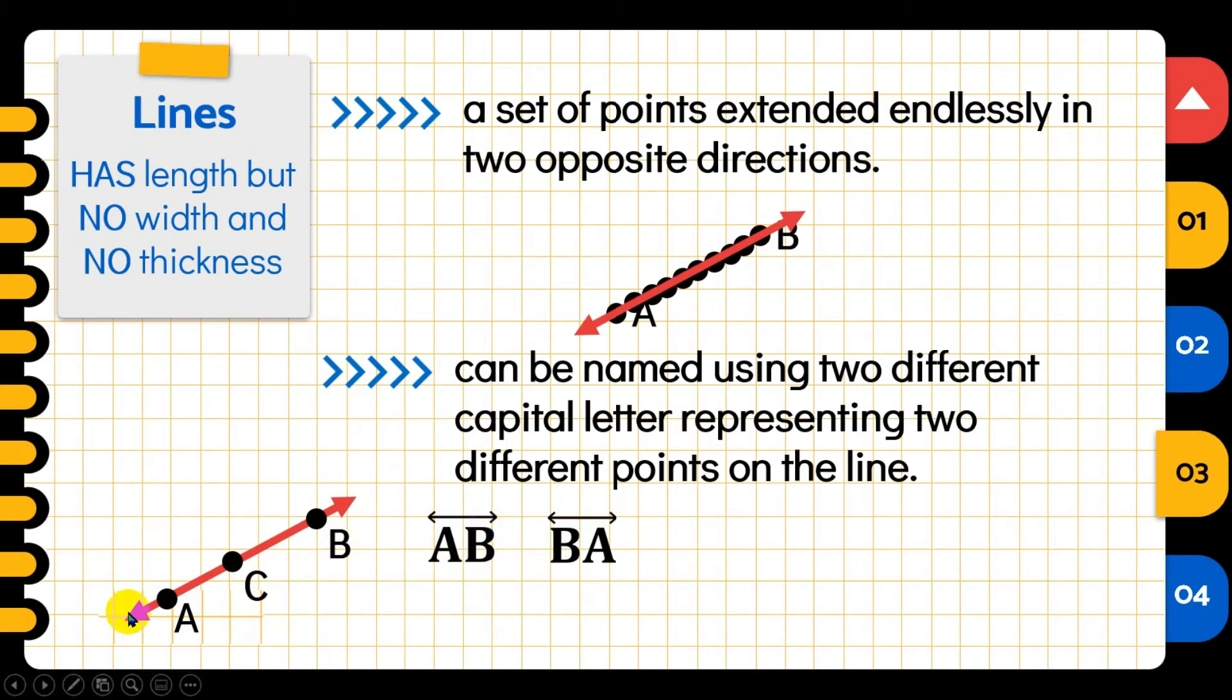While in this example, since we have three distinct points, we can give different names to this line. But again, even though we can give different names to this line, it refers to only one line. We have line AB or line BA. Again, it extends endlessly into opposite directions. And our symbol for line is the double-headed arrow above the two capital letters. And these capital letters are our two points. So AB and BA are the same. AC and CA. This represents this line. And another is line BC or line CB.